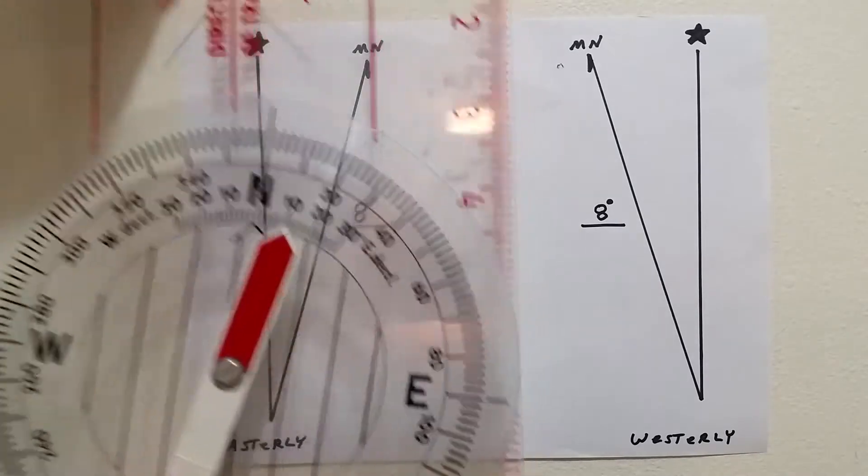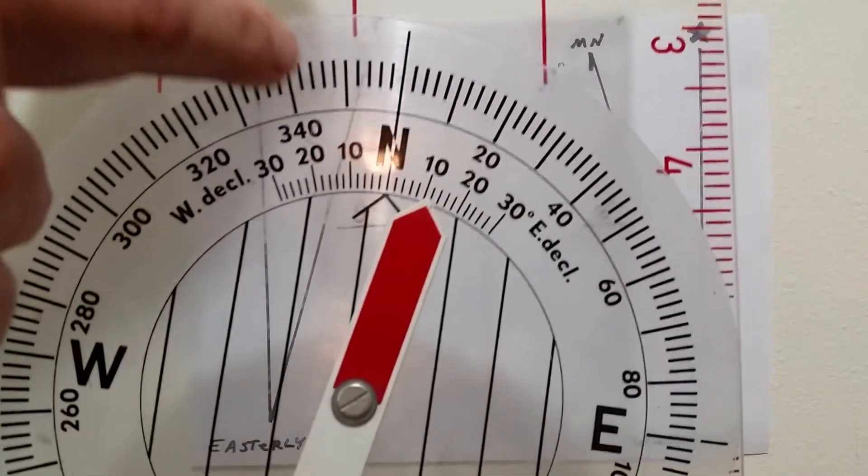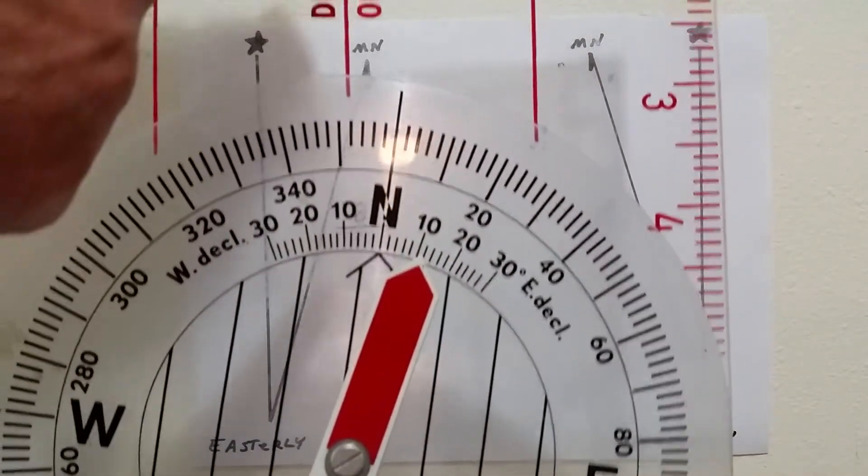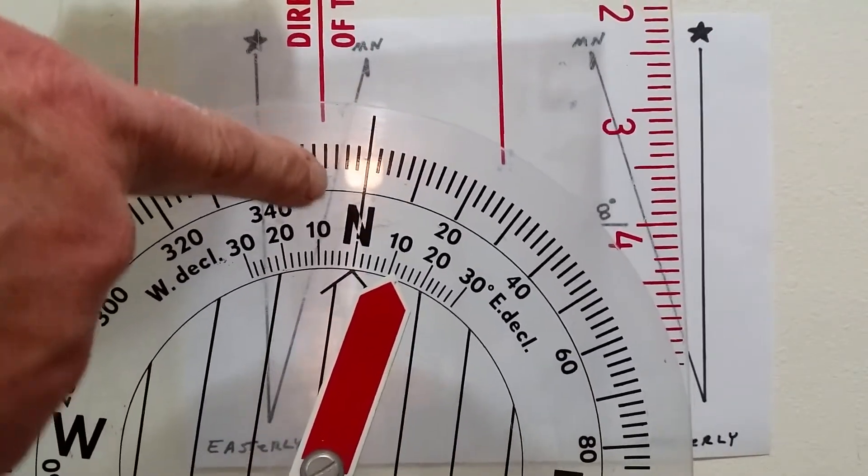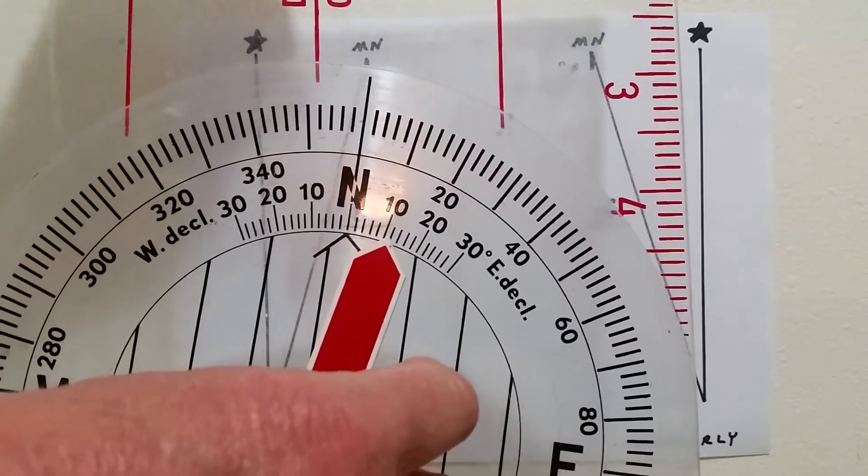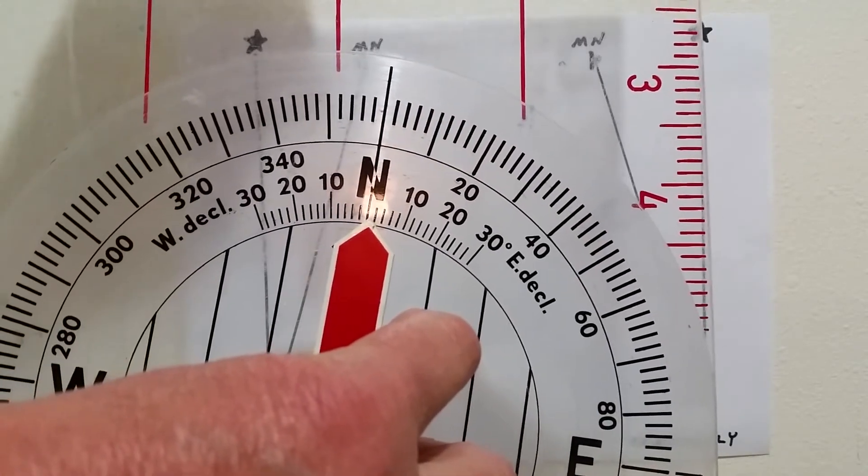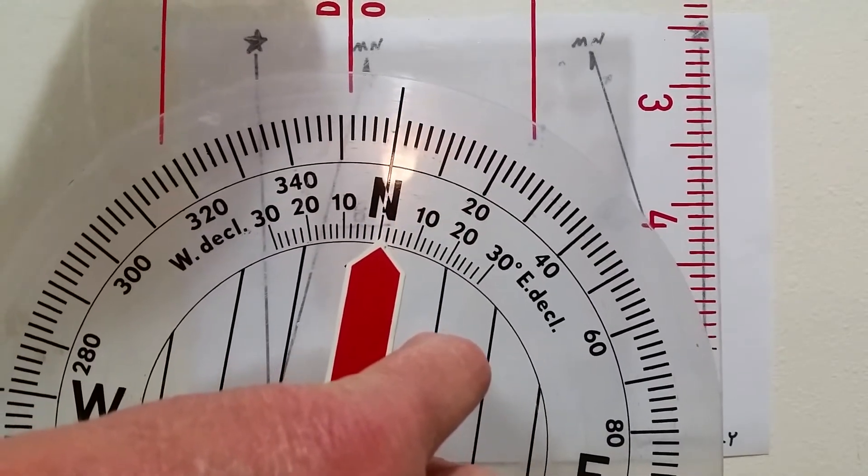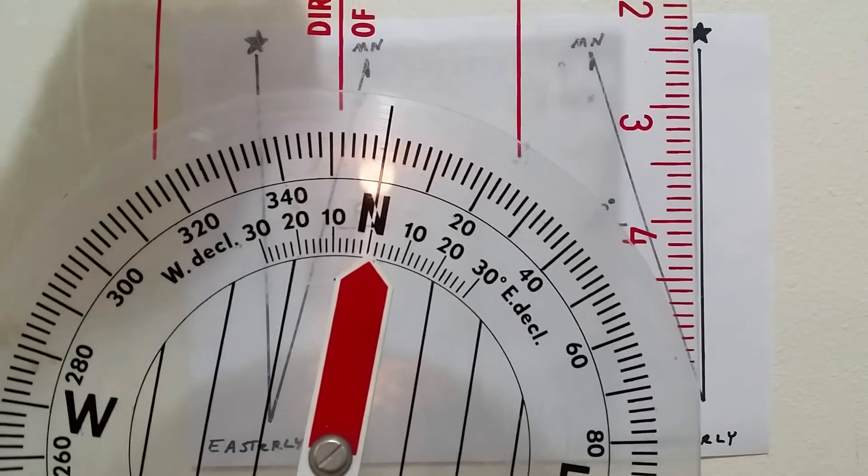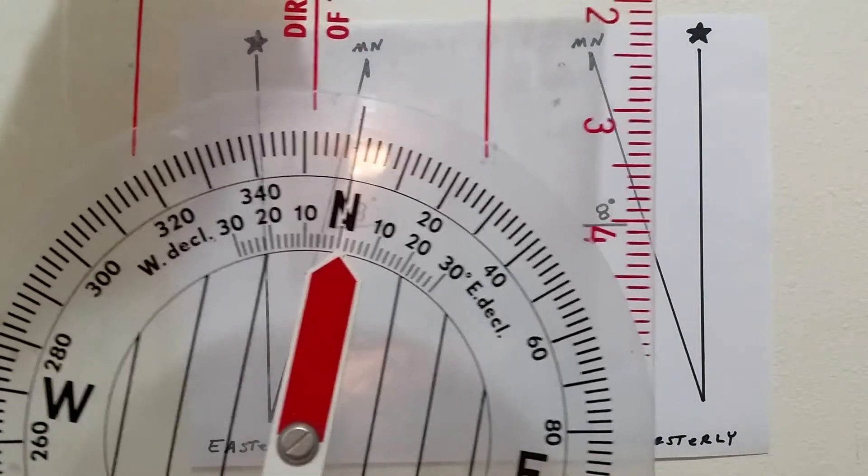So now that is my new heading. Here's my direction to travel. Eight degrees. So as long as I keep this on north as I walk that direction, I'm now walking the correct direction to where I need to go on the map.